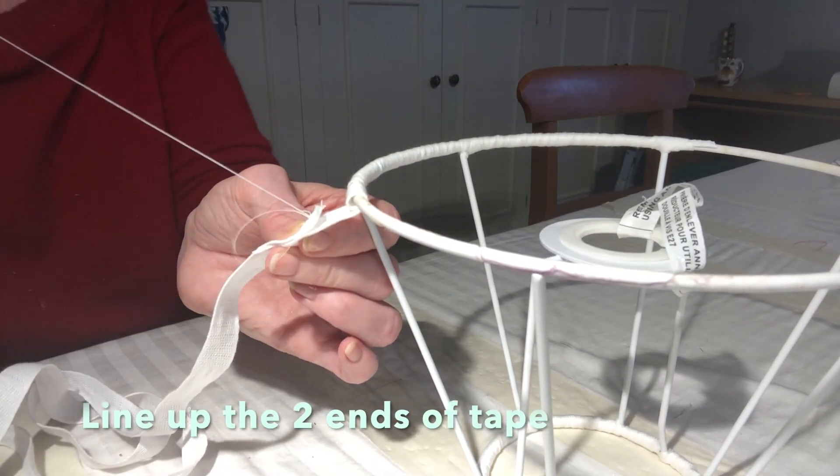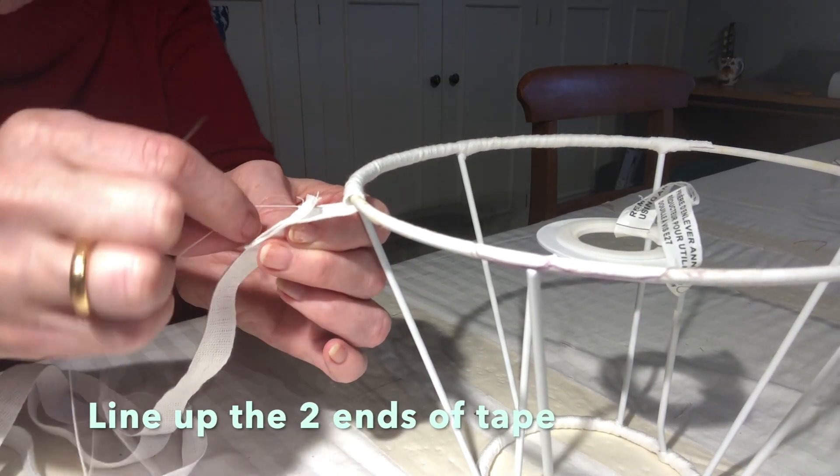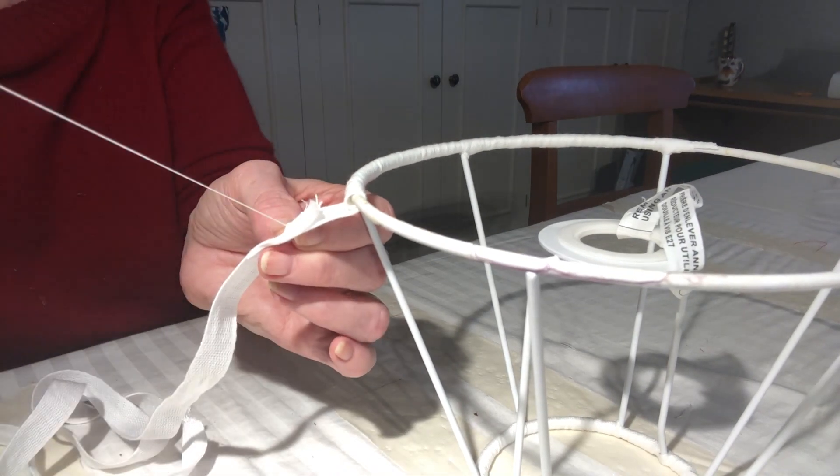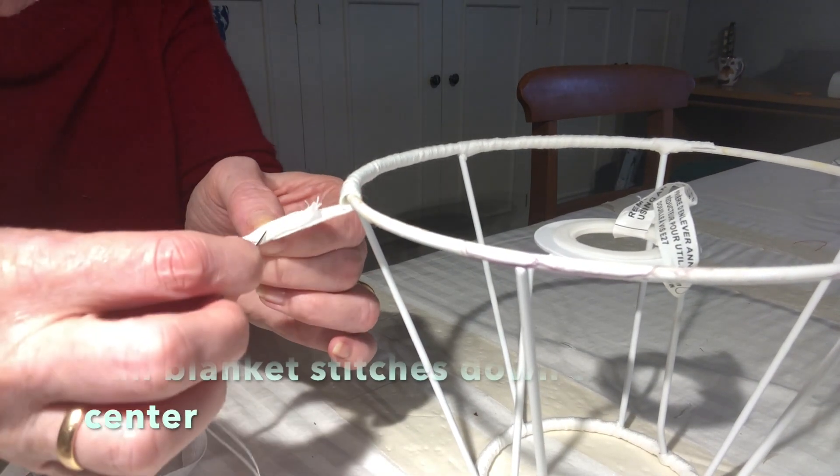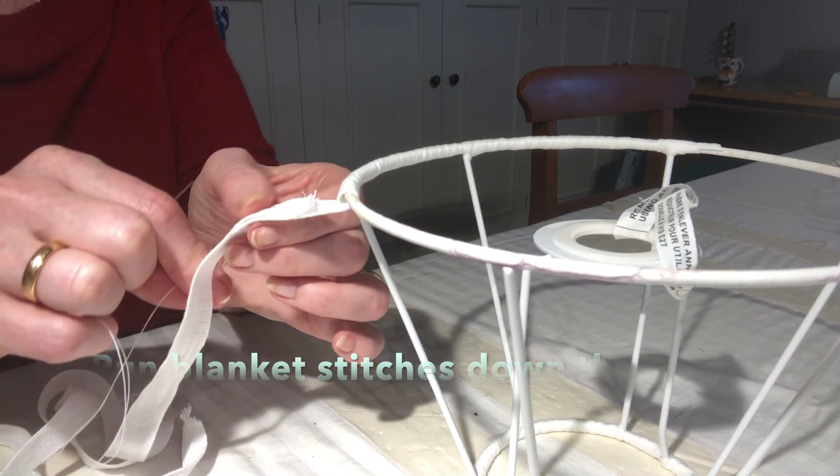Start by stitching a few backstitches at the top and loop through to lock. Run three or four blanket stitches down the centre of the join and then secure with a couple of backstitches, looping through to lock.